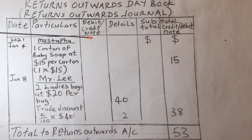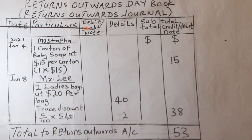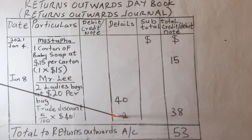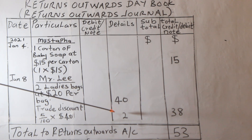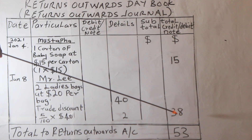It should also be noted that goods must be the normal goods that the business deals with — bought and sold in the ordinary course of trade. Goods that the organization does not normally transact cannot be recorded in the Return Outwards Day Book; for instance, purchasing office assets on credit — that is taken care of in the journal proper. The date records the date of the transaction, the particulars records the persons and details of where goods are returned to, and the details column is for adjustments. If goods are returned to the same supplier twice, the sub-total is used before transfer to the total column.